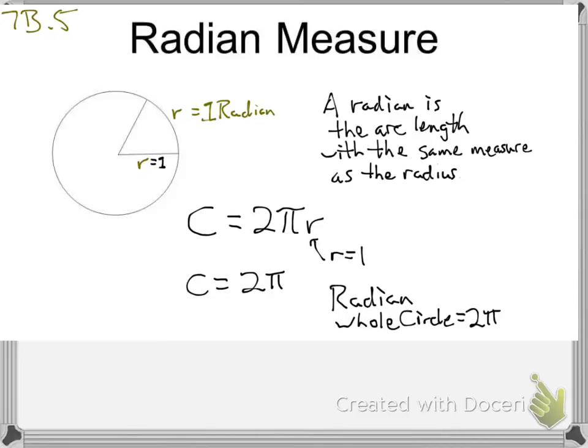So when we had that unit circle chart where we filled in all the degrees, now we need to be able to fill in the radian measurements. 2π is the distance around, its circumference.